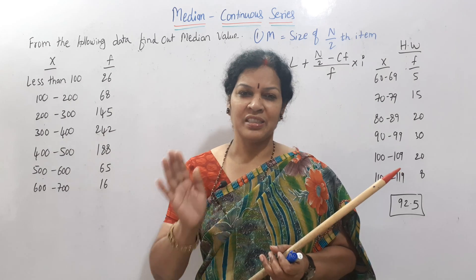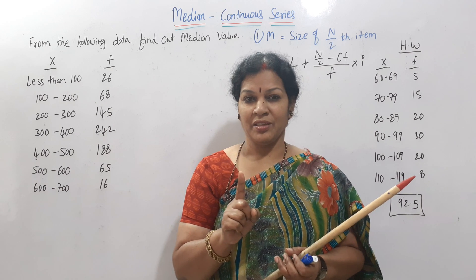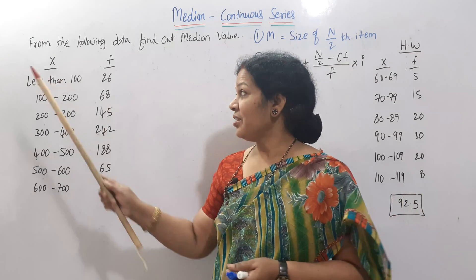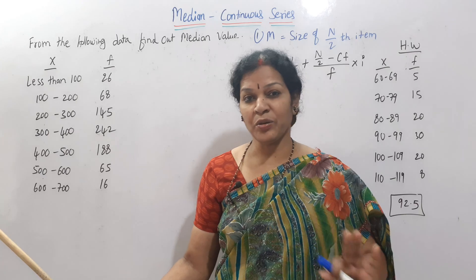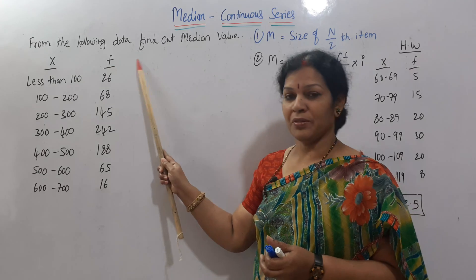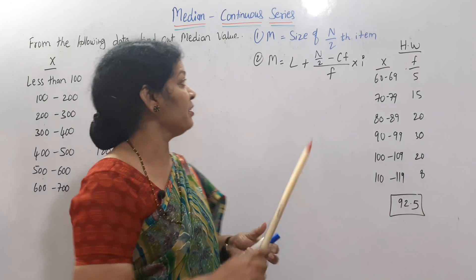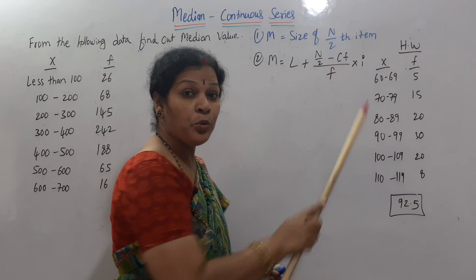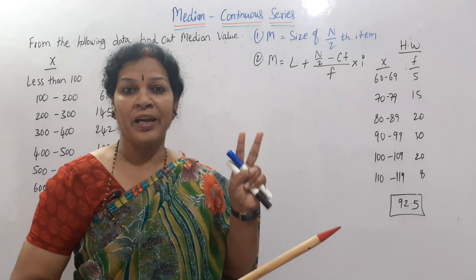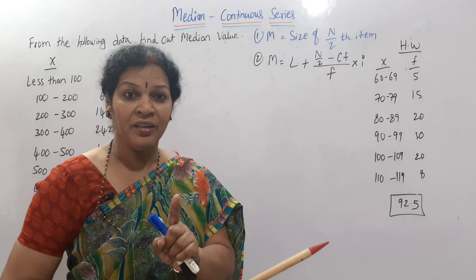In continuous series, to calculate the median, remember the same steps as discrete series. Step one: prepare the cumulative frequency (CF). In continuous series, X is always in ascending order, so we ignore the arrangement step. Step two: apply the formula — m is equal to size of n/2 th item. Note: n+1 is applicable in individual and discrete series; for continuous series it is n/2 th item only.